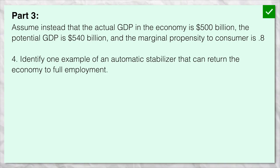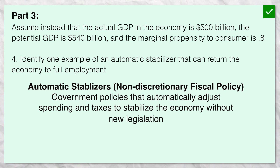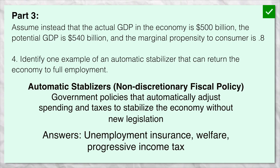One more question: identify a specific automatic stabilizer that could return the economy to full employment. This is not talking about the long-run self-adjustment — this is non-discretionary fiscal policy. These are laws already on the books that will increase government spending or decrease taxes and return the economy to full employment. You could say things like unemployment insurance, welfare, or a progressive income tax system. What doesn't work here is anything about wages or resource prices falling and the short-run aggregate supply shifting to the right — that's not fiscal policy.